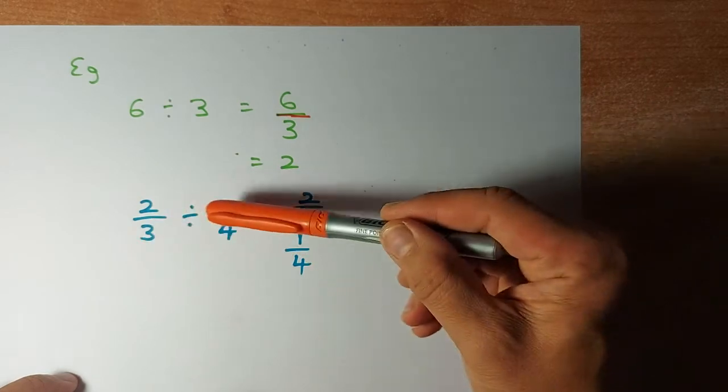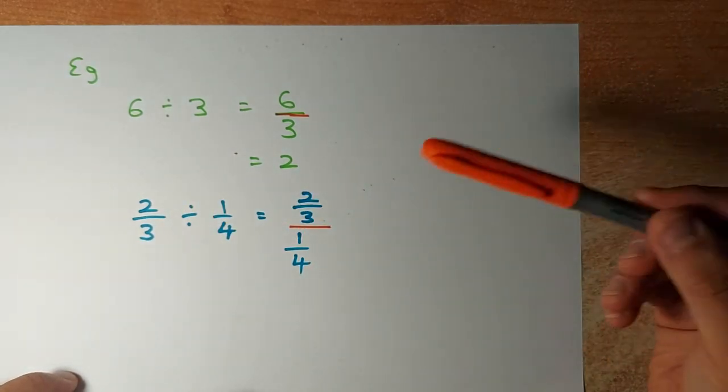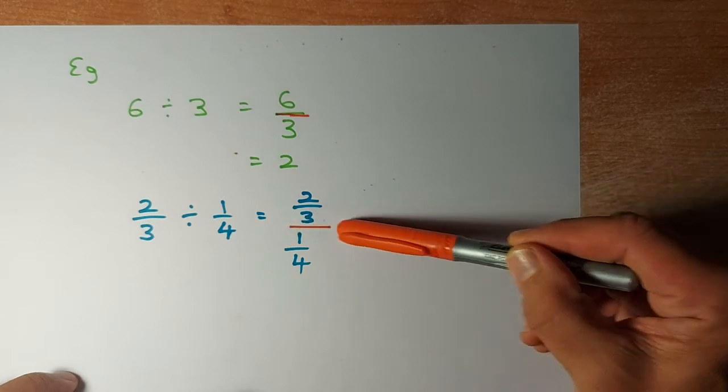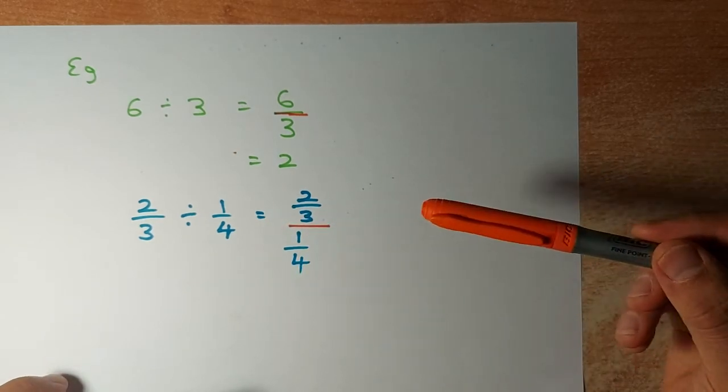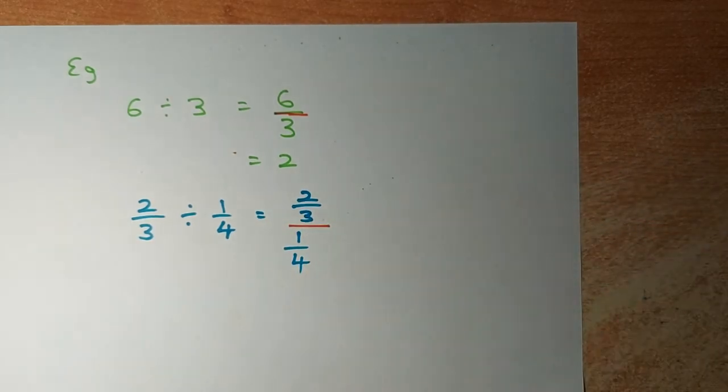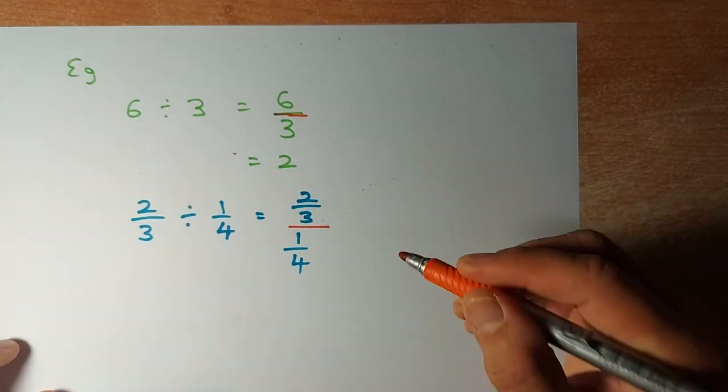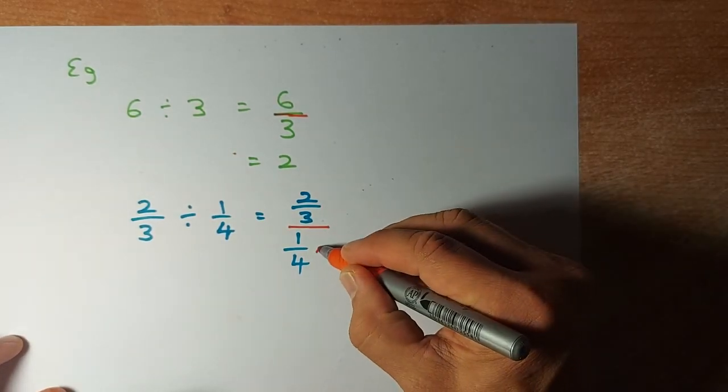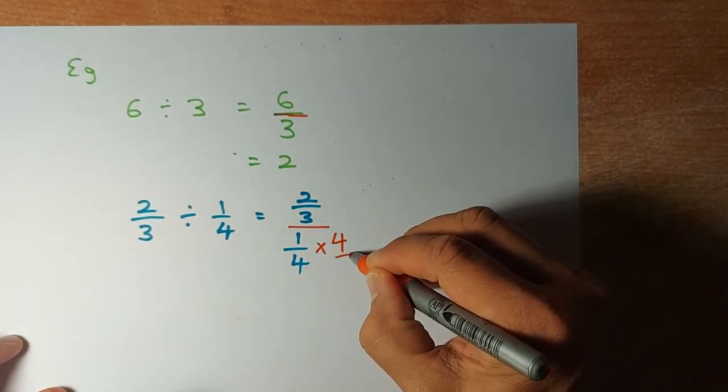if we have two-thirds divided by one-quarter, we put two-thirds over one-quarter. To make it a nice number, we need to get rid of the one-quarter. To do that, very simple, we multiply by 4 over 1.